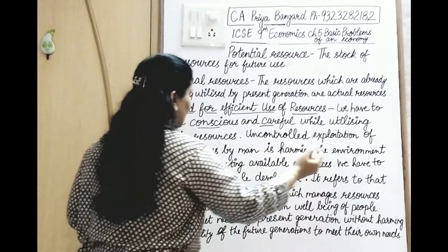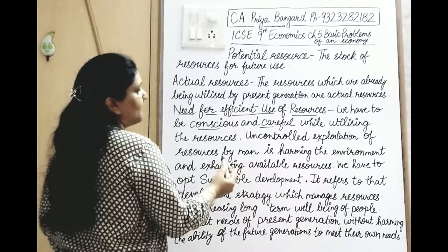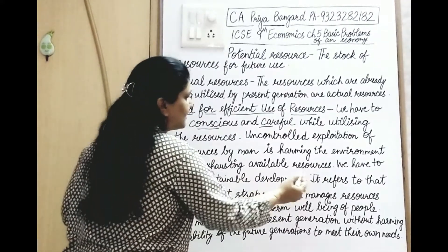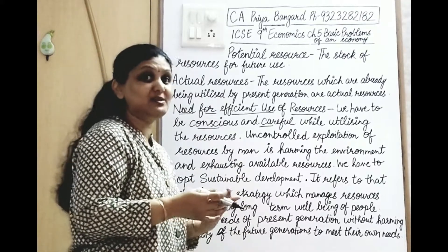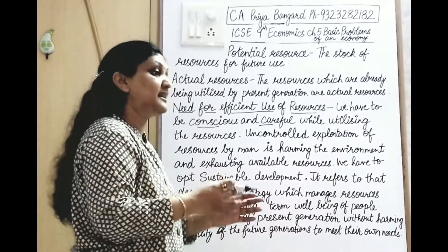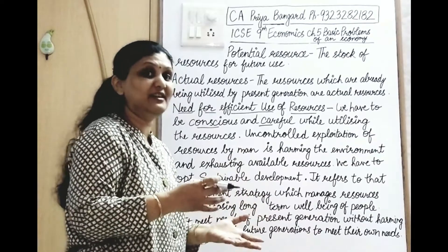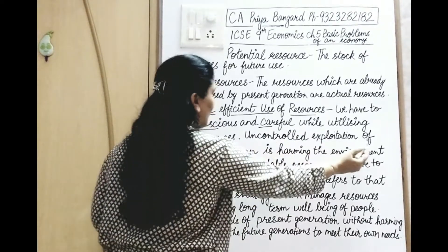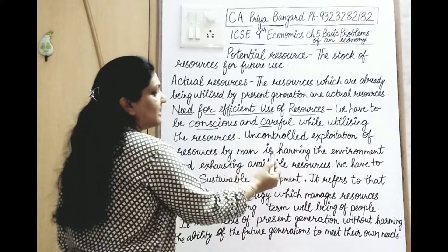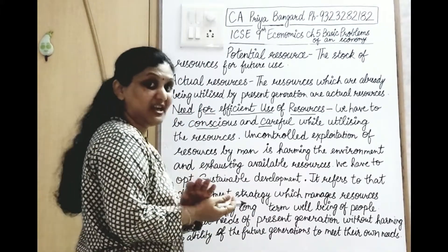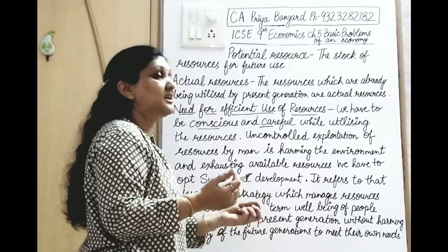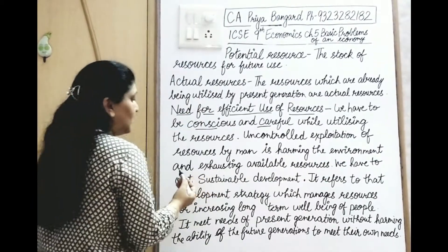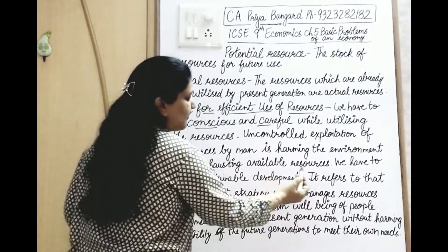Uncontrolled exploitation of resources by man is harming the environment and exhausting available resources. When you are exploiting resources in an uncontrollable manner — exploiting more than you need and not taking care of future generations — you harm the environment. For example, cutting a lot of trees means there is no good quality air to breathe, and available resources get exhausted.